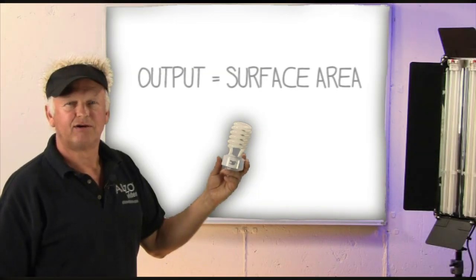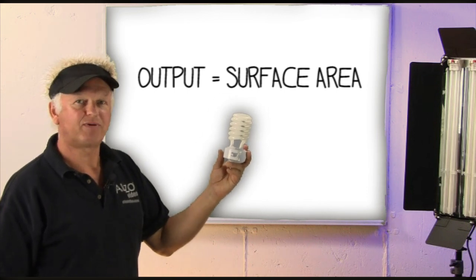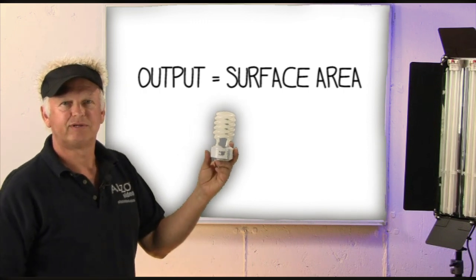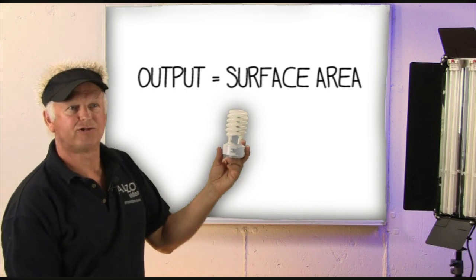The intensity or luminous output of a fluorescent light is determined primarily by the surface area of the glass tube. So that's to say that more light equals a larger tube, as in this 45 watt Alzo bulb versus this 85 watt.